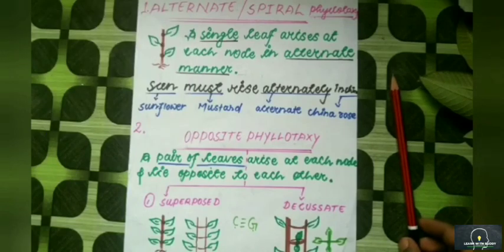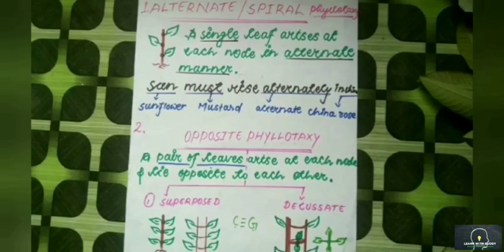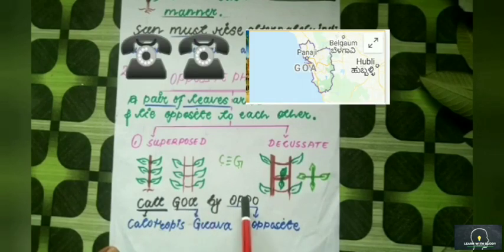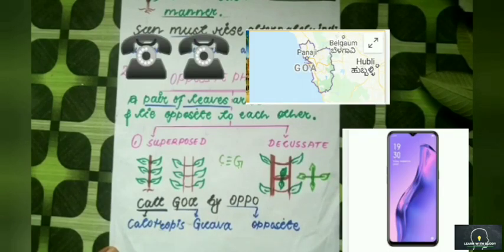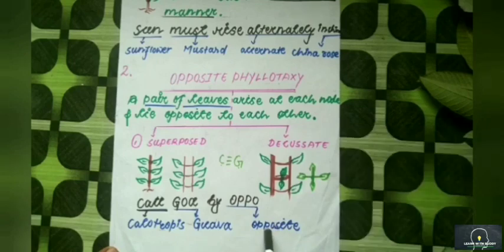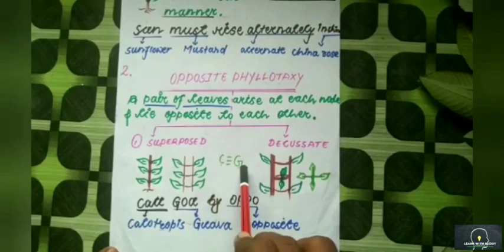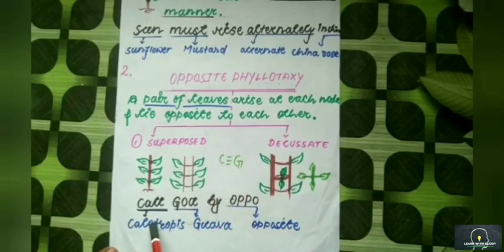The examples of opposite phyllotaxy are Calotropis and Guava. The mnemonic is: 'Call Guava by Oppo.' Call for Calotropis, Guava for Guava, and Oppo for Opposite. Another trick: in DNA, C always lies opposite to G — C for Calotropis, G for Guava.